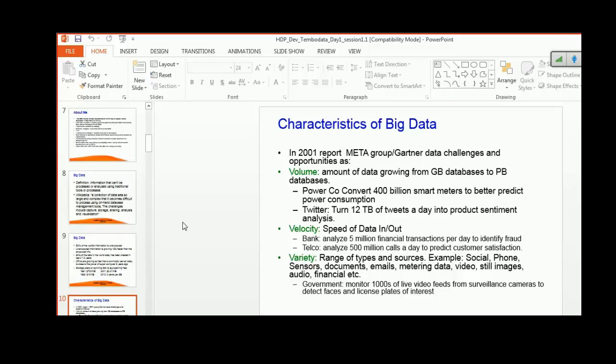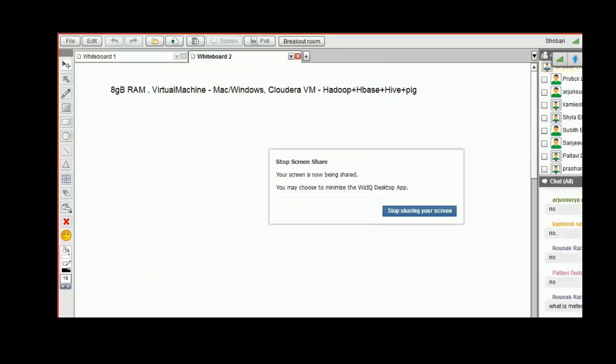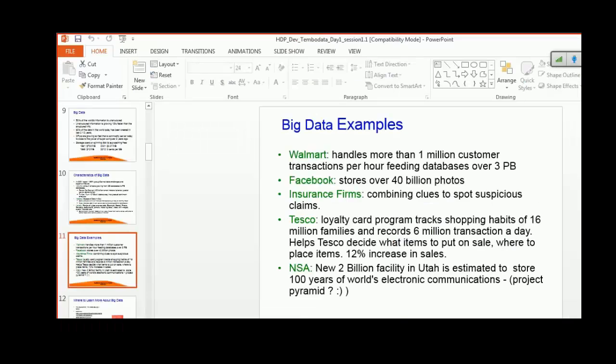The type of data includes human-generated data like documents, emails, video, still images. Governments monitor thousands of live video feeds from surveillance cameras to detect faces and license plates of interest. Metering data is basically electricity usage measured on a meter basis. Government captures this data to see trends, maximum usage seasons, and minimum usage times. With that, they can base their buying decision for electricity on that particular season.